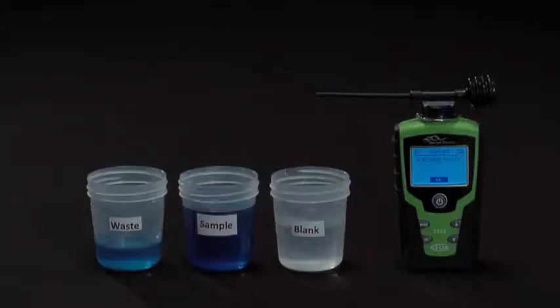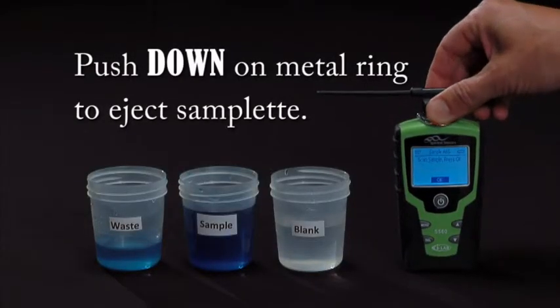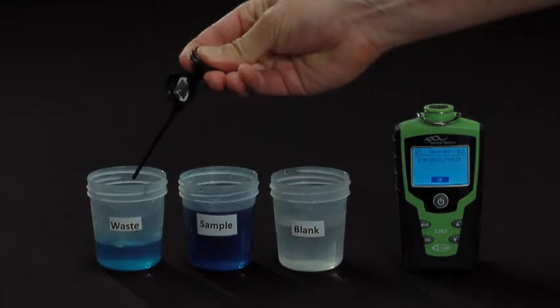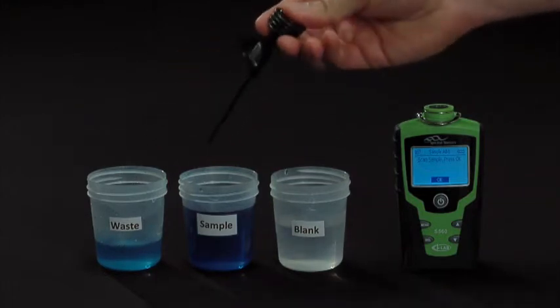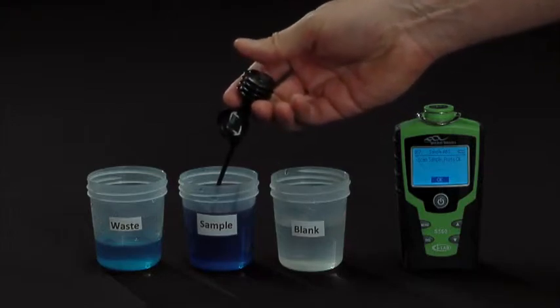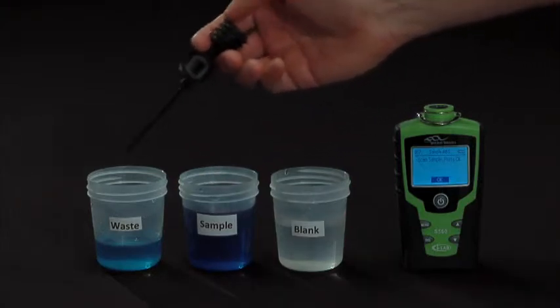Once the blank has been scanned, we'll eject the Samplet from the top of the iLab and expel the blank into a waste pail. We'll then draw the sample into the Samplet and expel that into the waste pail to properly flush the Samplet.